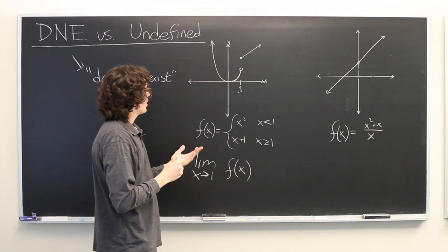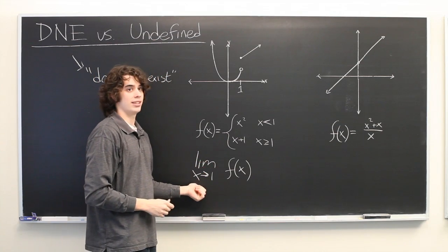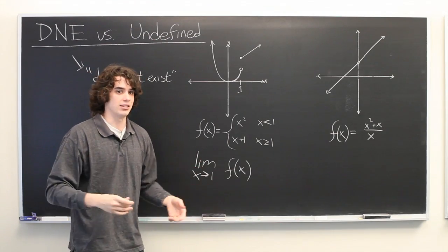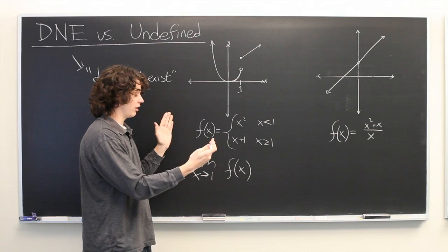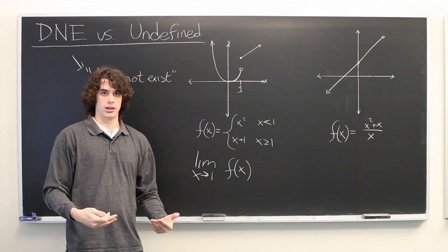This is a piecewise function and this limit is said to DNE or it does not exist. When the left side of the limit and the right side of the limit do not agree, the limit does not exist.